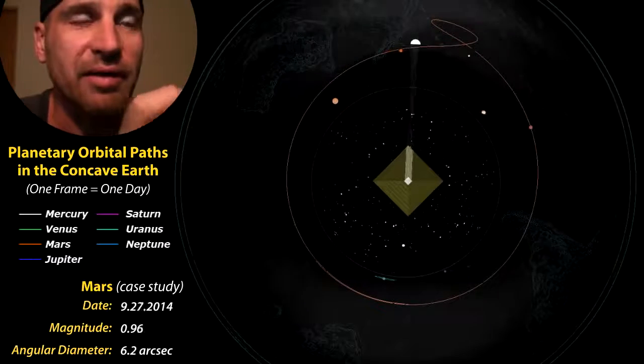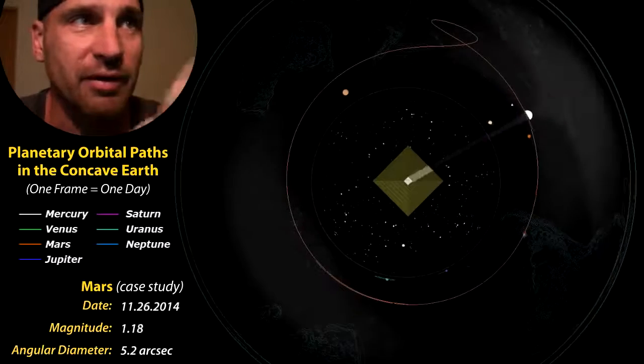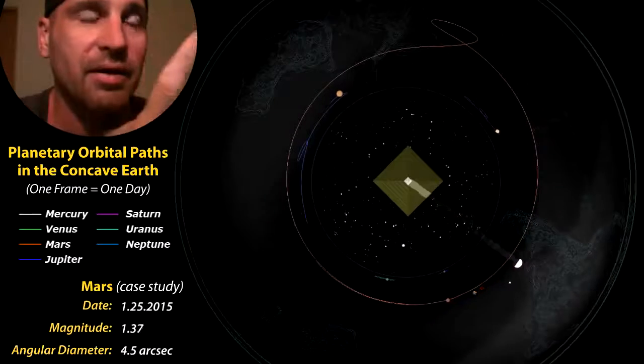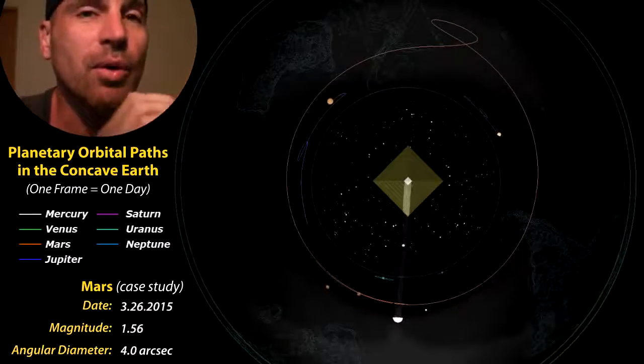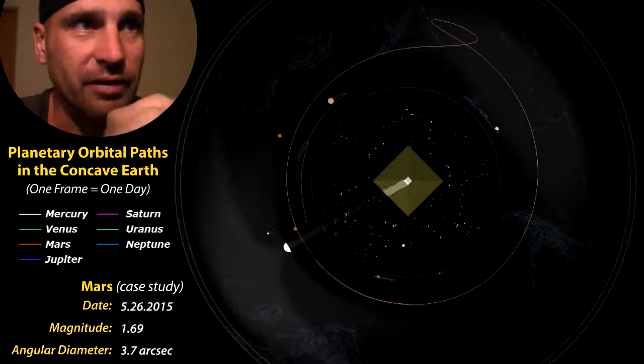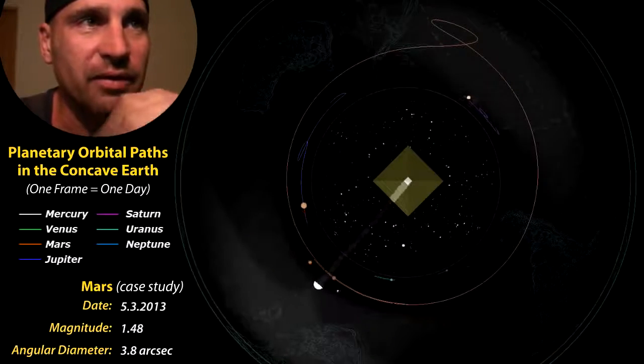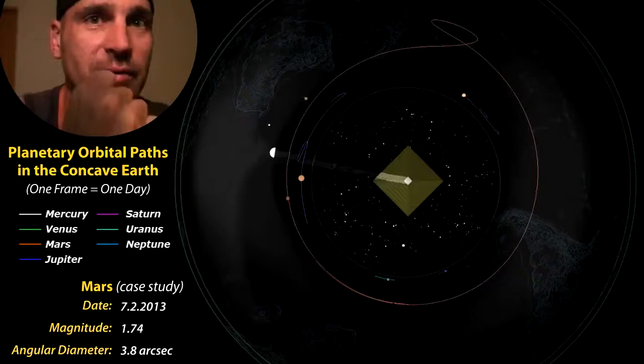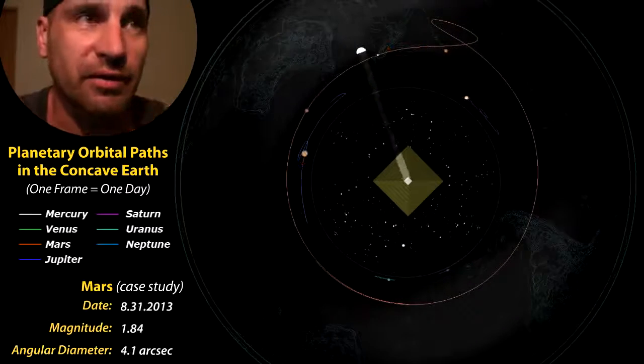And so the superior planets, which include Neptune, Uranus, Jupiter, and Saturn, they are going to be more in sync with the celestial sphere. They're not going to appear to move as much using the celestial sphere as a reference.